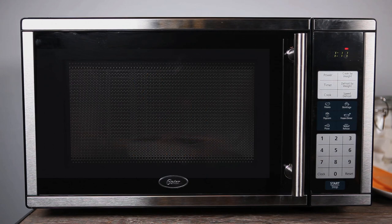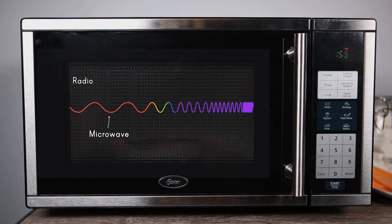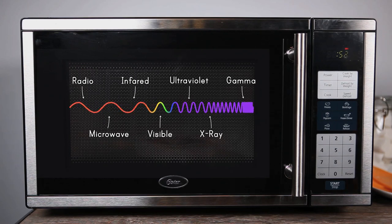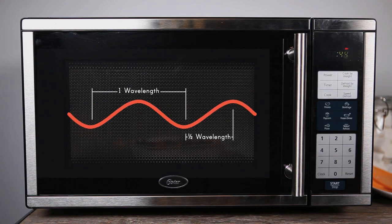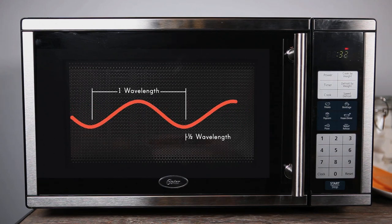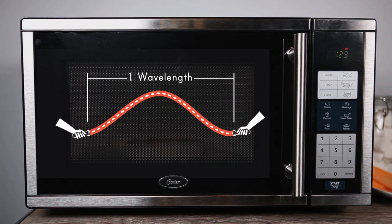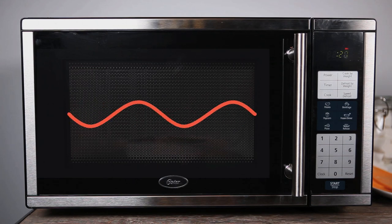Let's explain the science first. Microwaves are part of the electromagnetic spectrum — they sit right between radio waves and infrared radiation. Microwaves are characterized by their size, or wavelength, and their energy. Like all electromagnetic waves, microwaves oscillate as they travel through space. You might think of one wavelength sort of like a jump rope being shaken up and down.